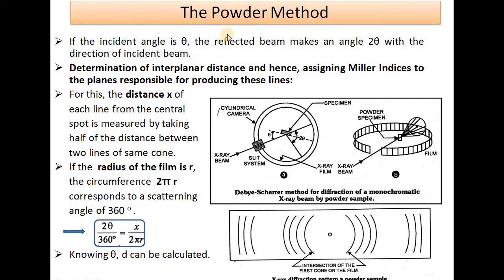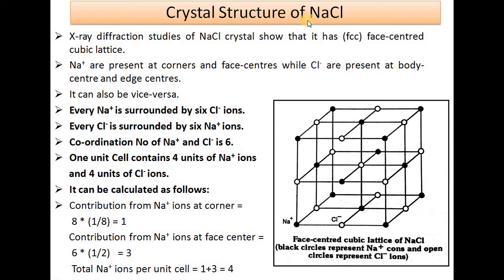This completes the powder method for X-ray diffraction by crystals. Next, we consider the crystal structure of NaCl. From X-ray diffraction studies it has been found that sodium chloride has a face-centered cubic lattice. In this FCC lattice, sodium ions are present at corners and face centers, while chloride ions are present at the body center and edge centers. Every Na+ ion is surrounded by 6 chloride ions, and each chloride ion is surrounded by 6 Na+ ions, giving a coordination number of 6 for both.